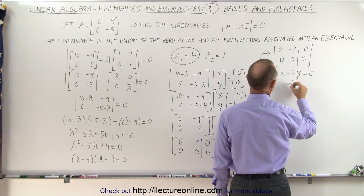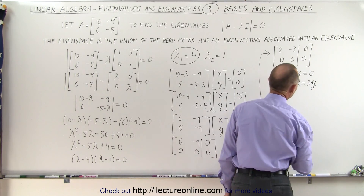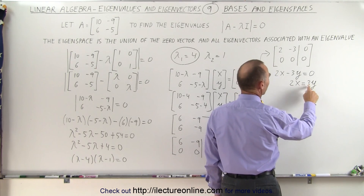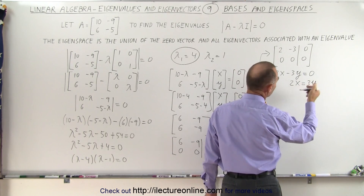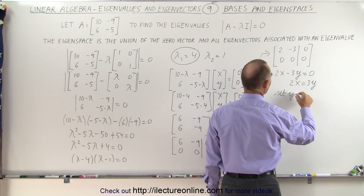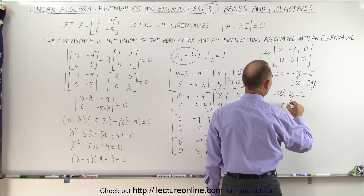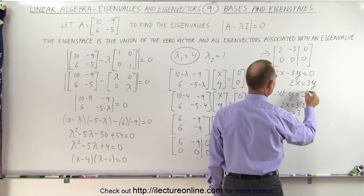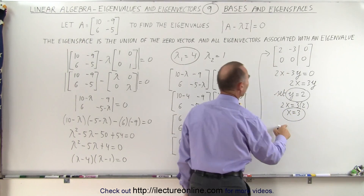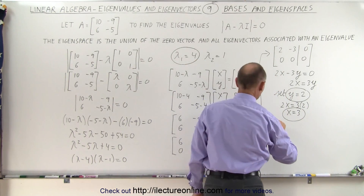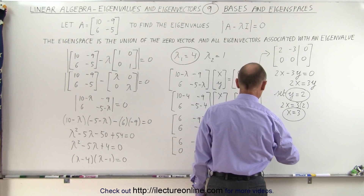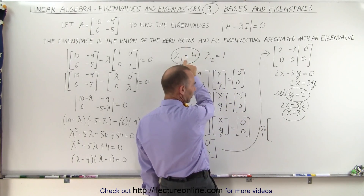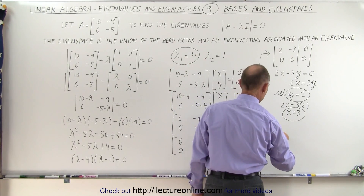If we move that across, we get 2x = 3y. To find the proper values for x and y, we can set y = 2. If y = 2, then 2x = 3 × 2, so x = 3. This means the eigenvector v₁ associated with eigenvalue λ₁ = 4 is [3, 2].